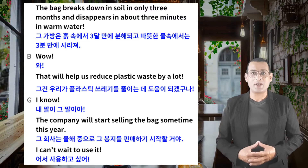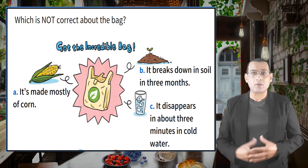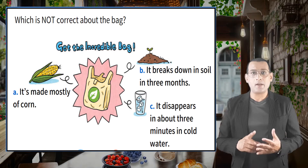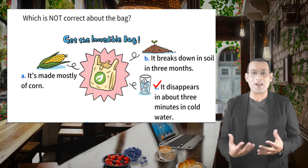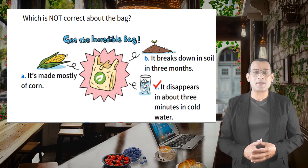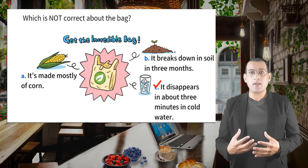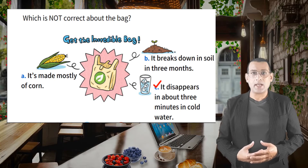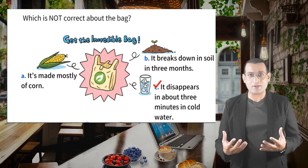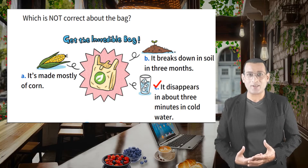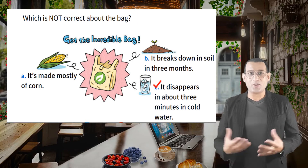Good expression, right? So what is the incorrect statement — A, B, or C? C. Right, you are correct. It says it disappears in about three minutes in cold water. That is incorrect. It's not cold water — it disappears in warm water.